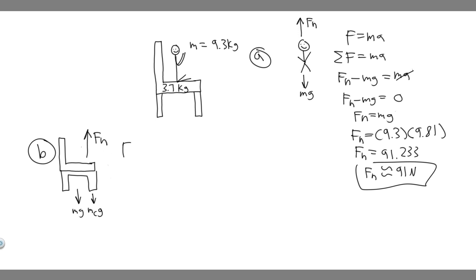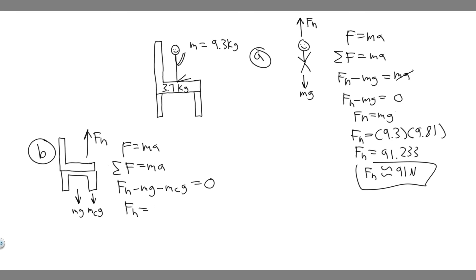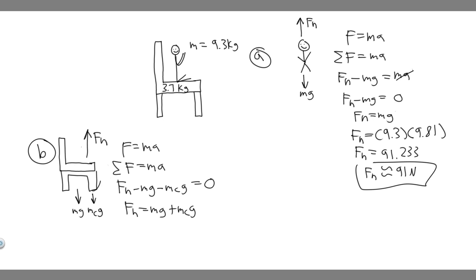Now when we do the same thing — force equals mass times acceleration, which is zero — we take the sum of the forces in the y direction. We have F sub N positive, then minus mg for the chair's weight, and then minus m_child times g. This equals zero. So if we solve for the normal force, it's going to equal the mass of the chair times gravity plus the mass of the child times gravity. In this case, unlike part A, there's another object above the chair, so we have to add that in too.